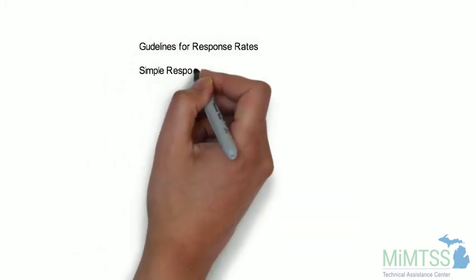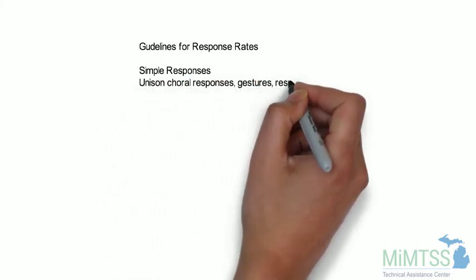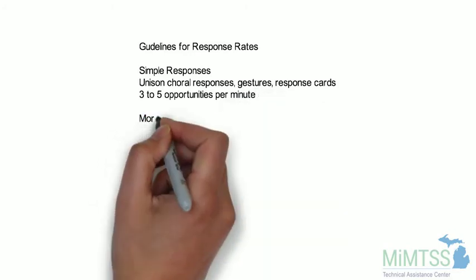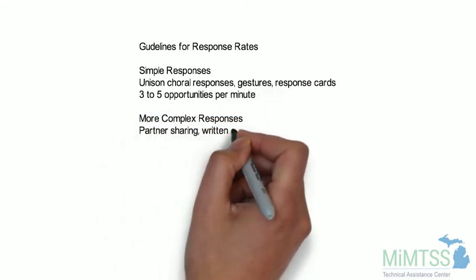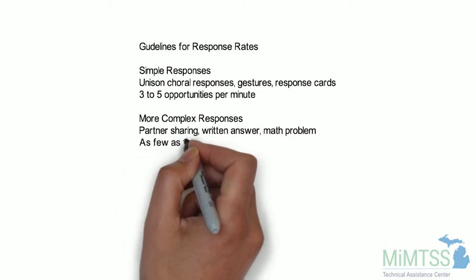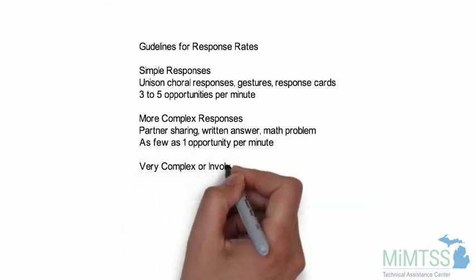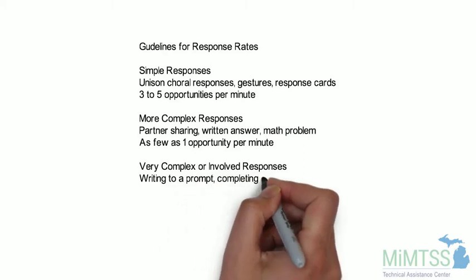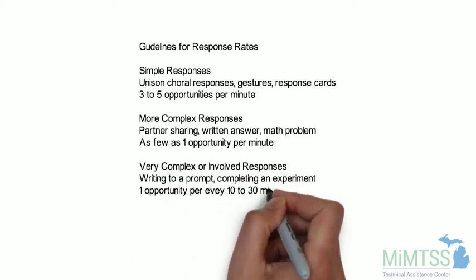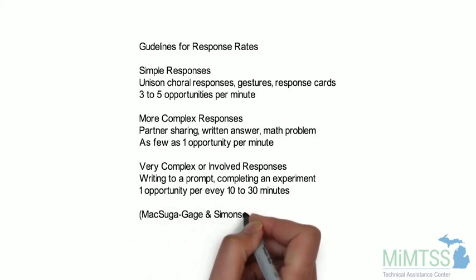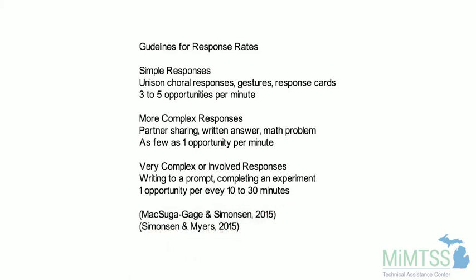Additional guidelines have further differentiated the rate based on the type of responding being elicited by the OTR. For example, a rate of 3 to 5 OTRs per minute for simple responses, whereas a rate of 1 OTR per minute is appropriate for more complex responses, such as partner sharing or writing an answer. In the case of a very complex or involved response, such as a science experiment, the rate of 1 OTR per 10 to 30 minutes is more realistic. Given all of these guidelines, Hayden et al. 2010 identified a recommended minimum rate of 3 OTRs per minute for teachers to provide students during instruction.